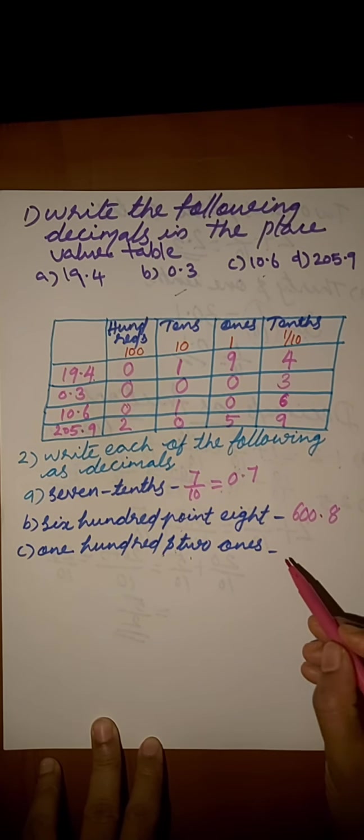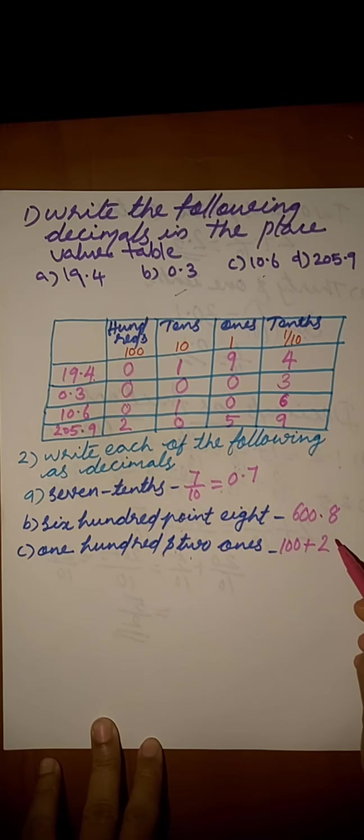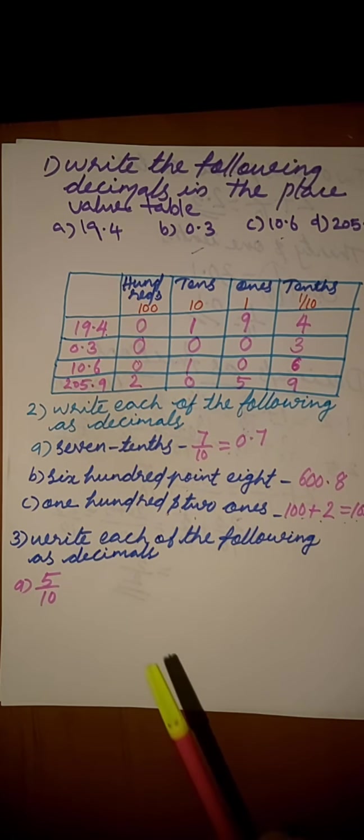102 ones. Here, 100 is whole number plus 2 ones. We get 102. Next question, write each of the following as decimals. First, 5 by 10.